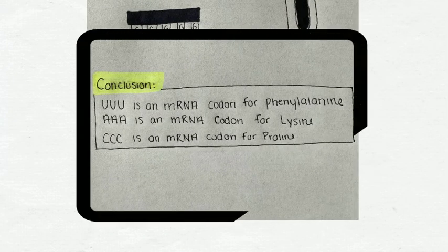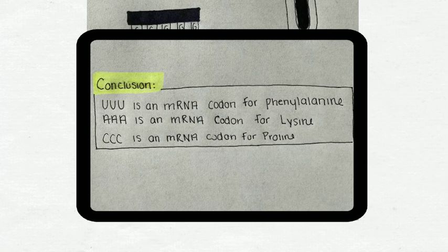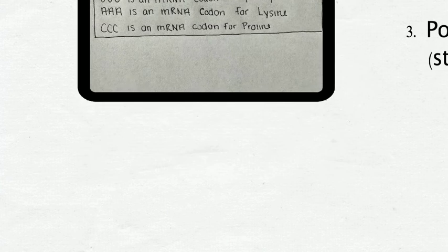In the end, Nirenberg and Matthaei discovered three codons with UUU representing the codon for phenylalanine, AAA representing the code for lysine, and CCC representing the code for proline.